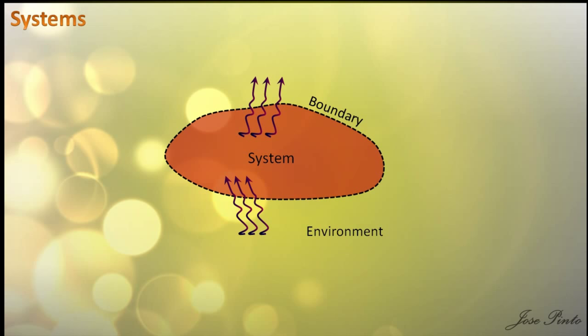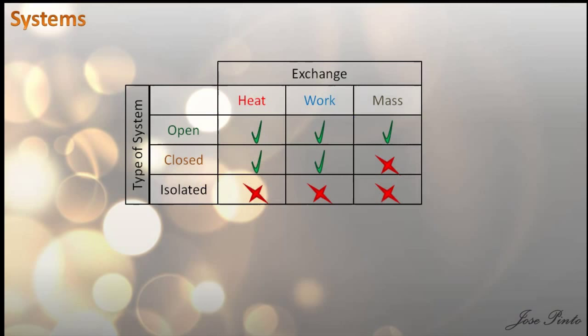With this idea, we can classify the systems in three. Open systems, where anything can happen — mass, work, or energy can be exchanged. Then you have closed systems, where energy can flow in and out in the forms of heat or work, but no matter can exit or enter. And finally, isolated systems are the ones where nothing, absolutely nothing, leaves or gets in.